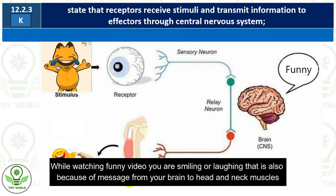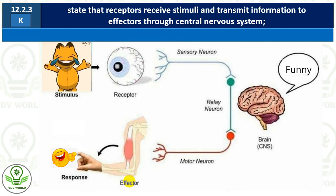Sensory neurons always carry the message from the receptor to the central nervous system. Relay neurons interpret the message. Motor neurons always carry the message from the central nervous system to the effectors. Effectors can be skeletal muscles, or they can also be glands — for example, glands that secrete digestive juices.